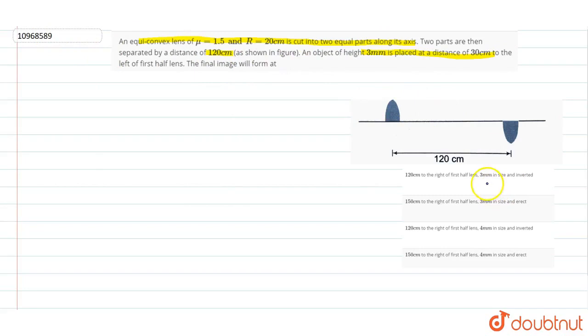Okay, we need this final image. In the option there is also a height, so we need the magnification. So the initial u is given, that is, this is a 3 mm height. Distance is 30 cm. We have already given this question.